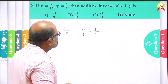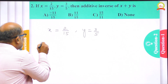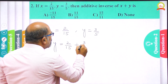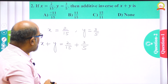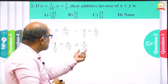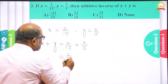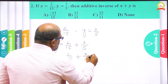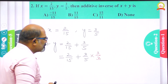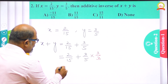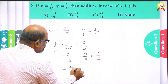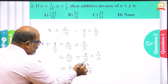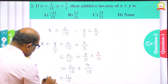First I want to find x + y. So x + y = 2/15 + 3/5. To add these rational numbers we must make the denominators the same. I take 2/15 as it is, but 3/5 must be multiplied by 3 in the numerator and 3 in the denominator to get 15. So we have 2/15 + 9/15. On adding, 2 + 9 = 11, giving us 11/15 as the value of x + y.